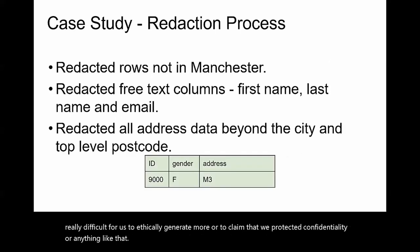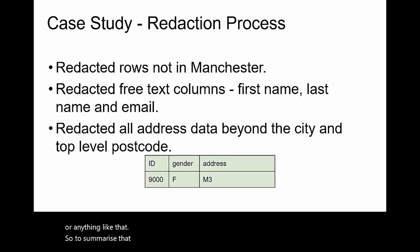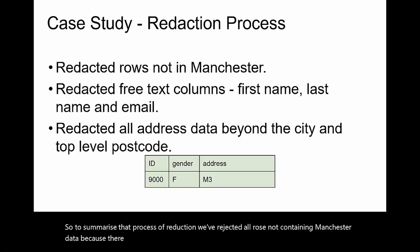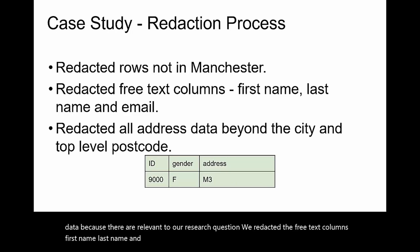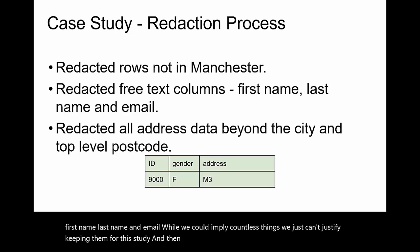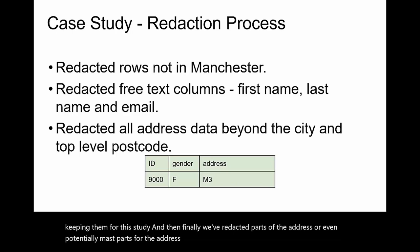To summarize the process of redaction: we've redacted all rows not containing Manchester data because they're irrelevant to our research question. We redacted the free text columns — first name, last name, and email — because while we could imply countless things, we can't justify keeping them for this study. And finally, we've redacted parts of the address, or potentially masked parts with nothing, keeping only the top level of that postcode.